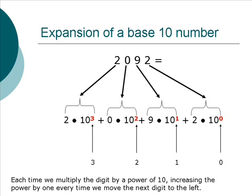We expand the base-10 number by multiplying each digit by a power of 10. The power of 10 that is used for each digit is uniquely determined by the position of that digit in the number with respect to the implied decimal point. The digit immediately to the left of the decimal point is multiplied by the zeroth power of 10. Then we increase the power of 10 by 1 for every digit we move to the left.